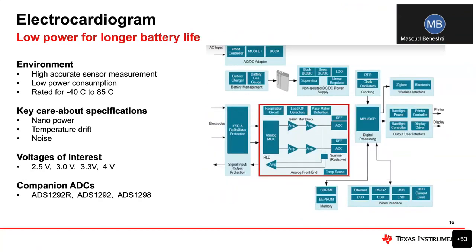Electrocardiogram is another application where you want to minimize power consumption and provide long battery life to the end user, along with highly accurate sensor measurement. In these applications we see different voltages used — 2.5, 3, 3.3, and 4 volts in the analog front end block. Common ADCs used include the ADS1292R and non-R, and ADS1298. REF35 provides these voltages for these applications.